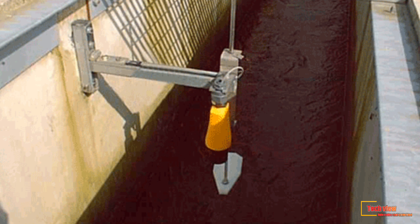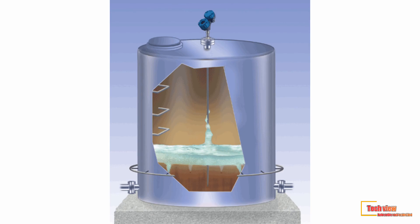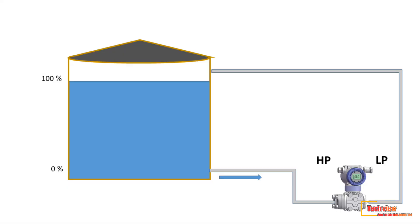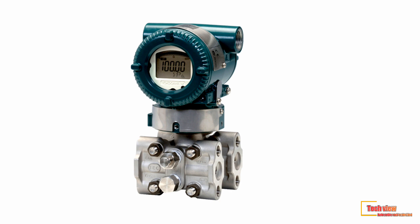Differential pressure level measurement comes under inferential level measurement technology. DP transmitters are versatile, and level measurement is just one of the processes where they are applicable. Even though there are specialized devices for these measurements today, many field engineers still prefer the good old differential pressure transmitter.